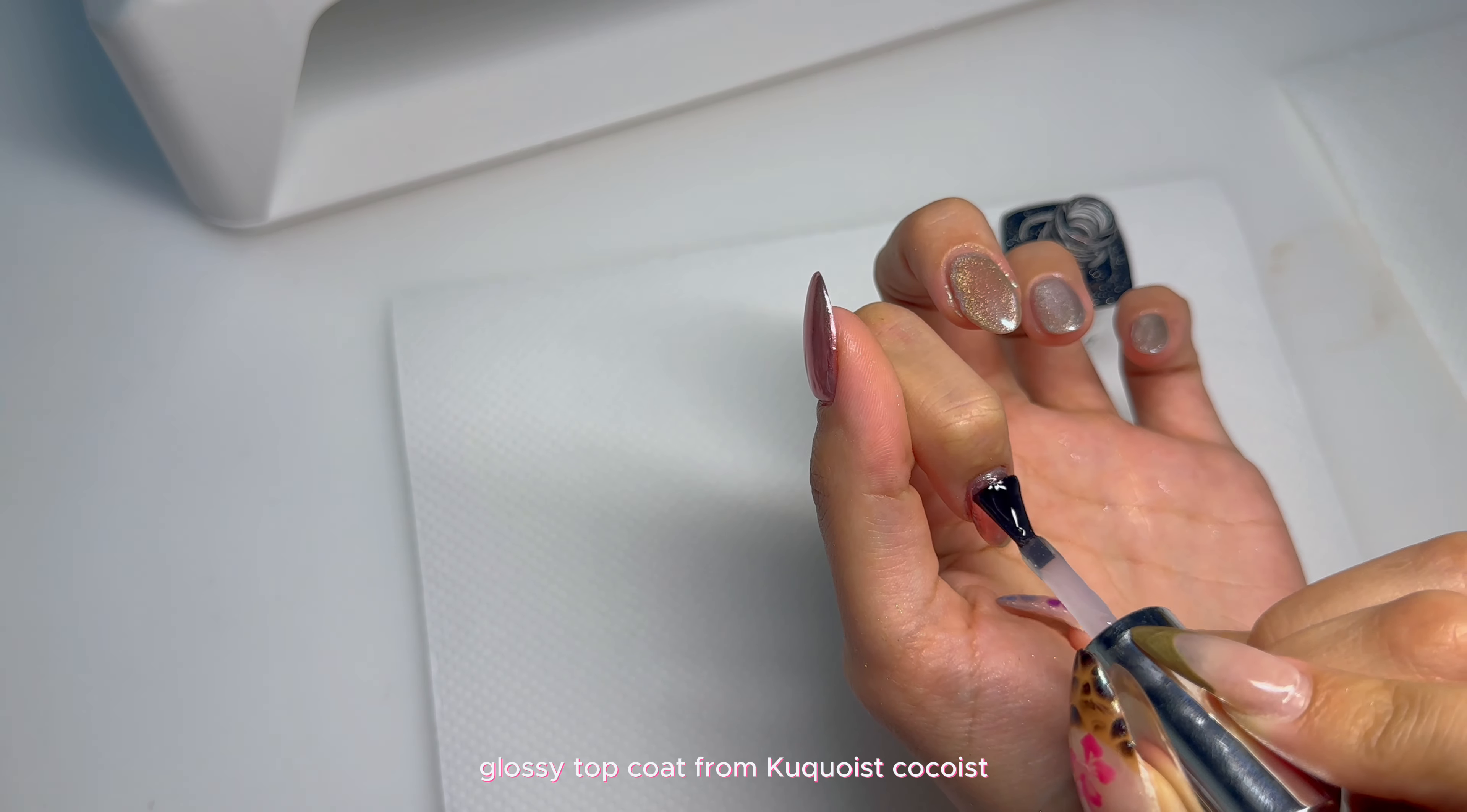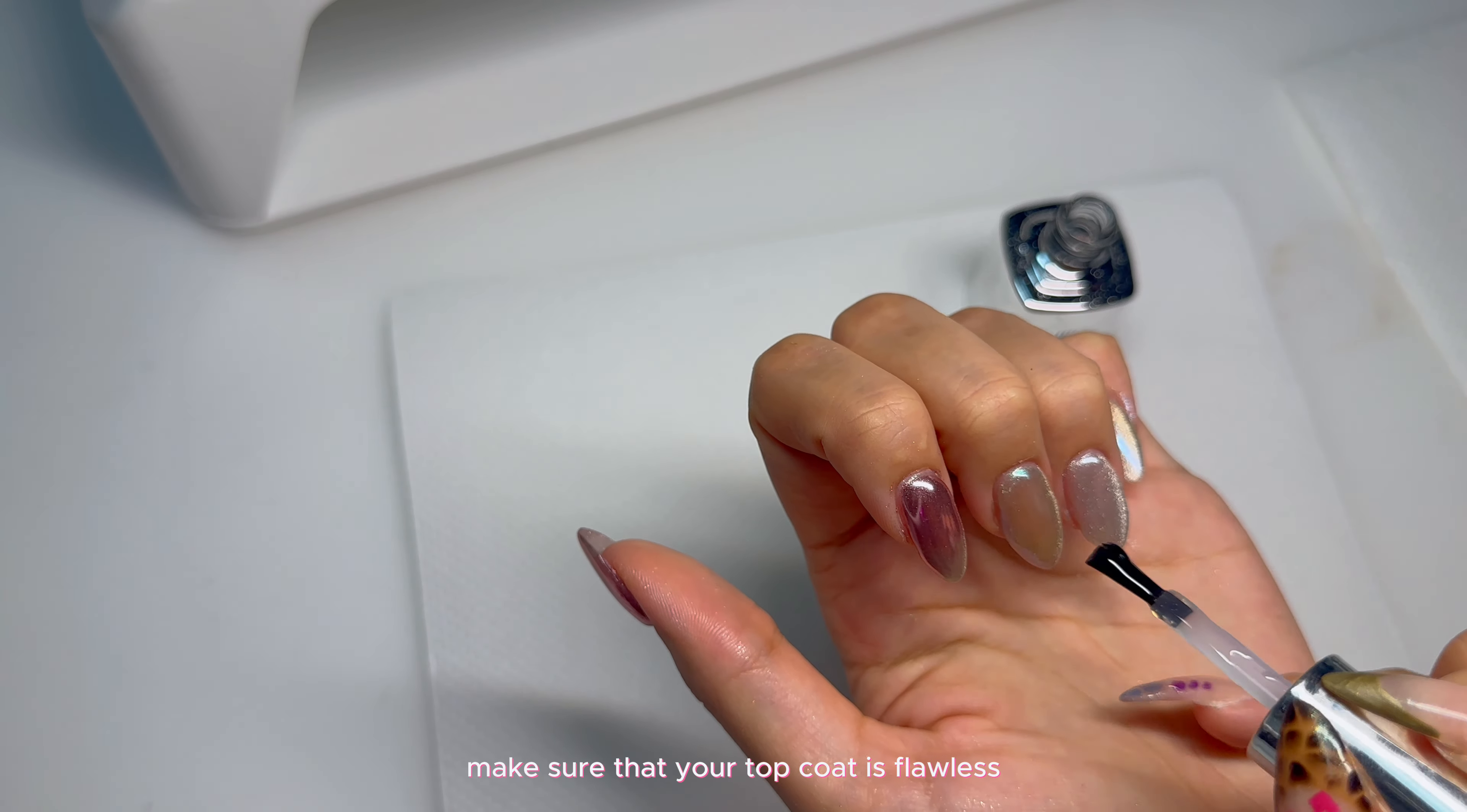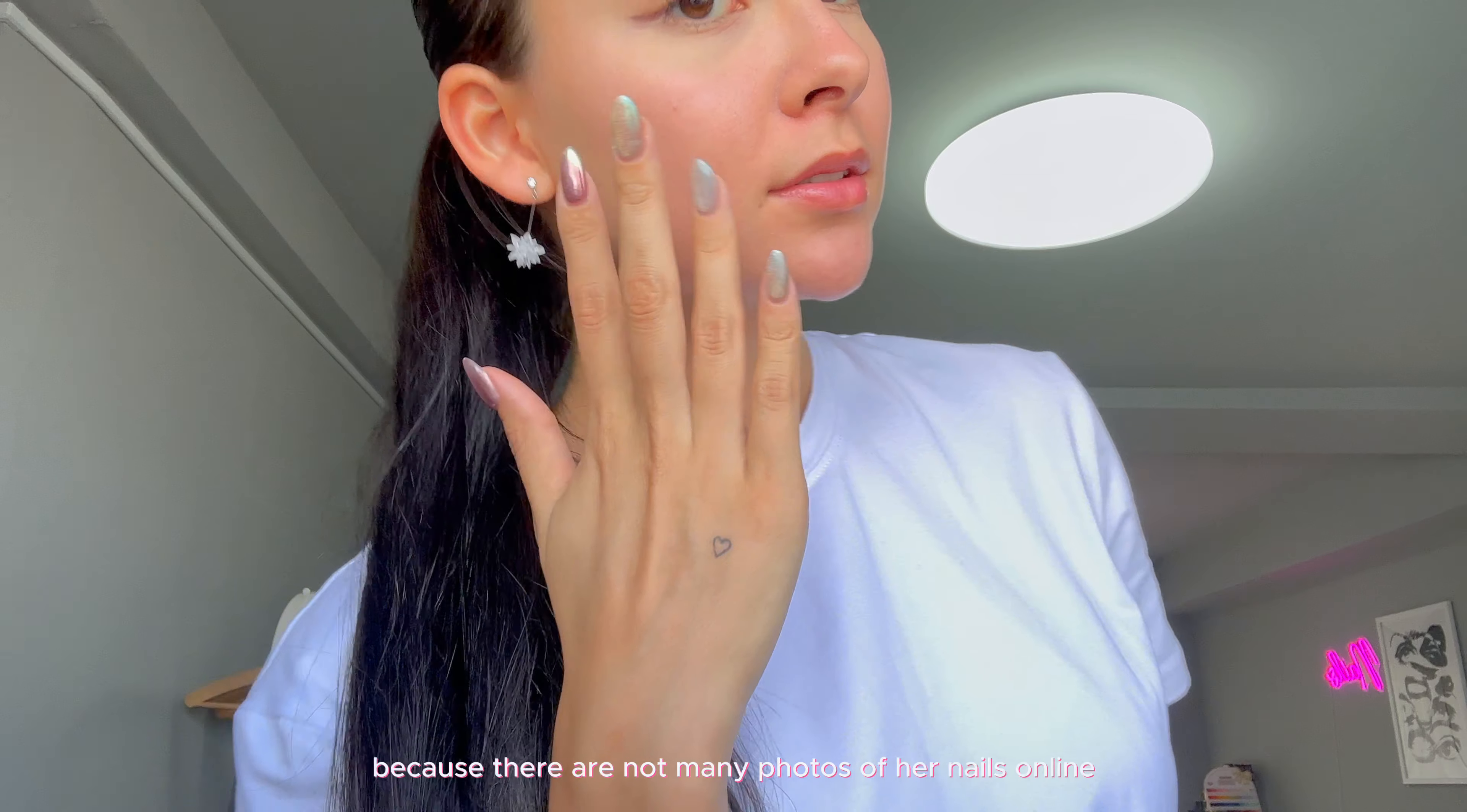Now I'm going to top coat every single nail with the glossy top coat from Kakoist. Let me know if I'm pronouncing anything wrong because I get a lot of comments telling me that I'm pronouncing a lot of things wrong, so that's embarrassing. But yeah, let me know. Make sure that your top coat is flawless and cure that for 60 seconds. This is the end result of my nails.